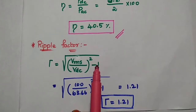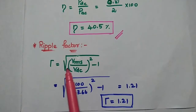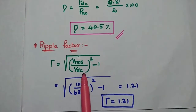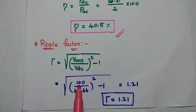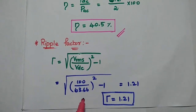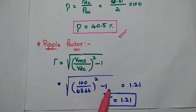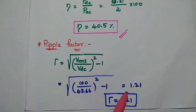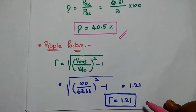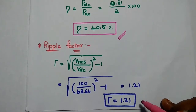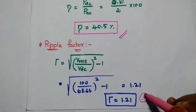The ripple factor = √((Vrms/Vdc)² − 1) = √((100/63.66)² − 1) = 1.21. As noted, the ripple factor for a half wave rectifier is always 1.21.